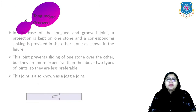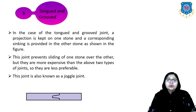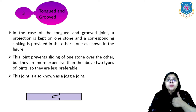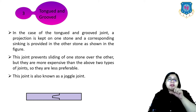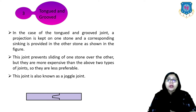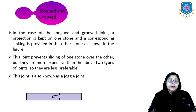The next one is the tongued and grooved joint. In this case, a projection is kept on one stone and a corresponding sinking is provided in the other stone, as shown in this figure. This joint prevents sliding of one stone toward the other, but they are more expensive than the above two types and are less preferable. This joint is also known as the joggle joint.